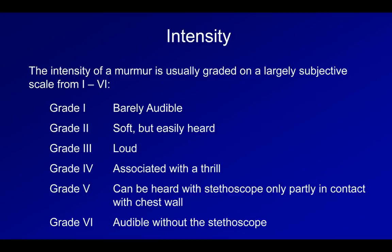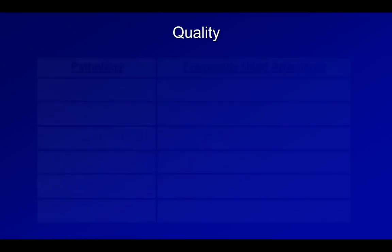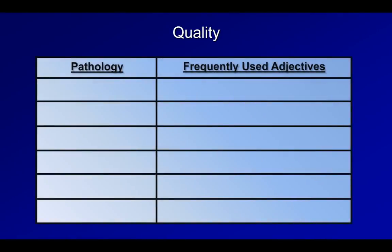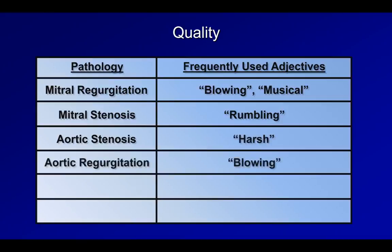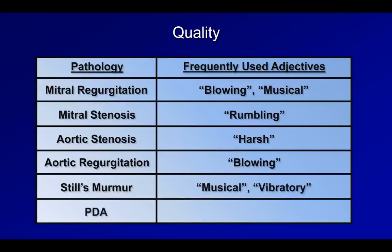We'll see at the end of the talk that there is data suggesting this humorous characterization is without merit. This brings us to the quality of the murmur — the most subjective and nonspecific of the seven murmur characteristics. It is essentially the difficult-to-describe timbre of the murmur. The murmur of mitral regurgitation is frequently described as blowing or musical. Mitral stenosis is rumbling. Aortic stenosis is harsh. Aortic regurgitation is blowing. Still's murmur, a benign murmur typically heard only in children, is often described as musical or vibratory. And a PDA murmur, also usually heard only in children, is described as machine-like.